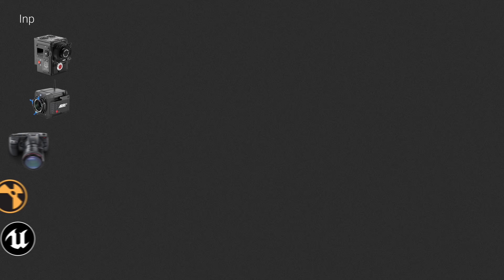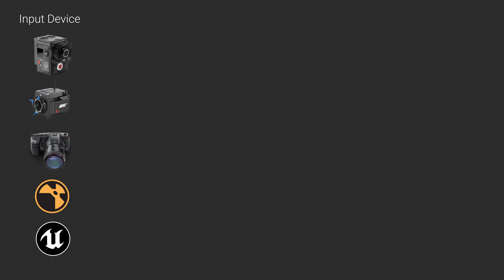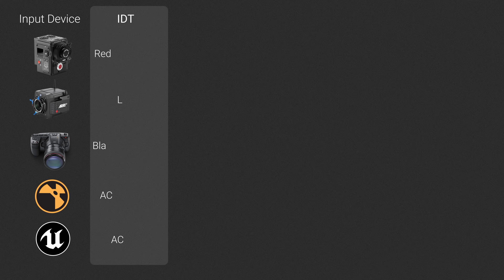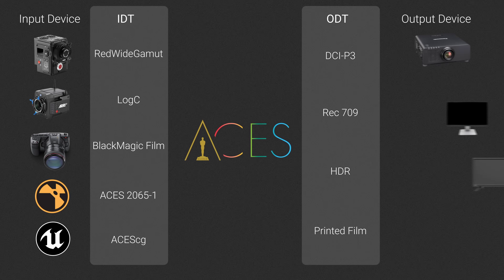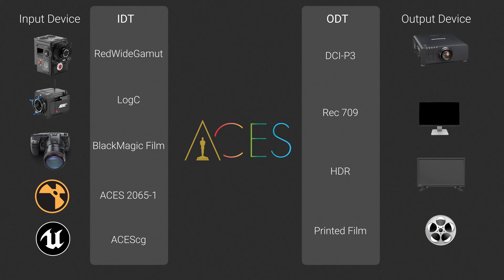If you have multiple file formats — like raw footage from different cameras and CGI elements — you will have a unified workflow. You have IDT, Input Device Transform, which transforms the source image to ACES, and ODT, Output Device Transform, which matches your output signal with the color space of your monitor or cinema projector. But in between, in ACES, all the magic happens — color grading, compositing and all other stuff.